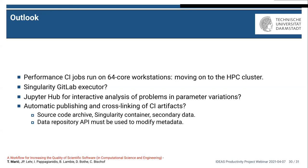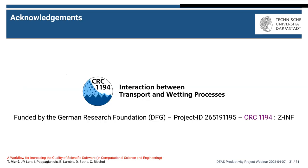For the outlook: right now we have performance jobs running on 64-core workstations, and we are moving onto the cluster. The question is whether the Singularity GitLab executor will be simple to set up. We are considering using JupyterHub to enable interactive collaborative analysis of notebooks, and automatic publishing and cross-linking of artifacts is possible but probably a more complicated workflow without substantial additional benefit since we only do this every couple of months. I'm very thankful to the German Research Foundation that funds this research and the Collaborative Research Center 1194 on Interaction between Transport and Wetting Processes here in Darmstadt.